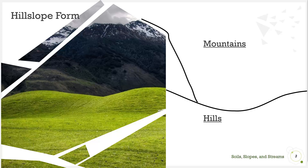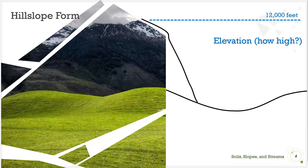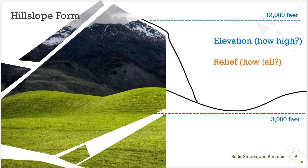Let's start by describing the mountains in the back. First, how high are the mountains? This is measured as the altitude or elevation of the peak. Here, the peaks lie at an elevation of 12,000 feet. Next, how tall are the mountains? This is called the relief. We need two measurements to calculate this: the upper elevation and the lower elevation. If the mountains extend from 3,000 feet at their base to 12,000 feet at their peaks, then the mountains have 9,000 feet in relief.